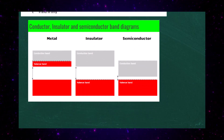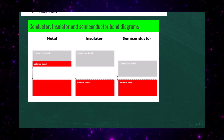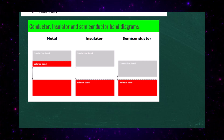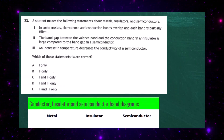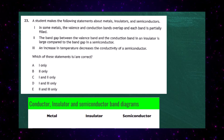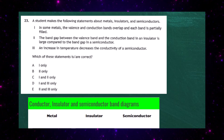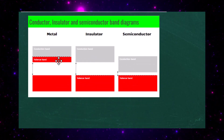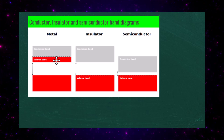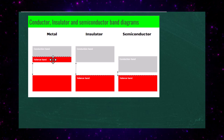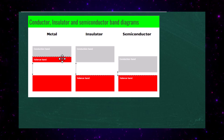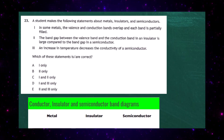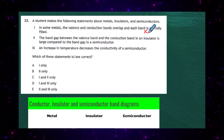Looking at the band diagrams for metal, insulator, and semiconductor — with the metal, the valence band does overlap the conduction band, but statement 1 says each band is partially filled. The valence band is not partially filled; it is actually full, but overlaps into the conduction band, allowing electrons to move into it. So statement 1 is untrue.